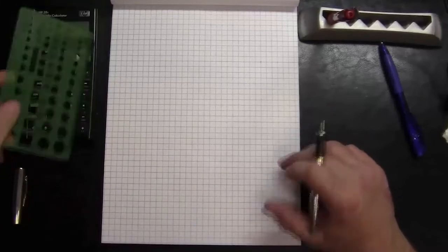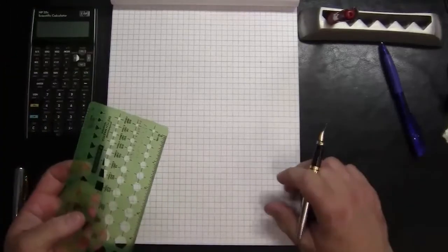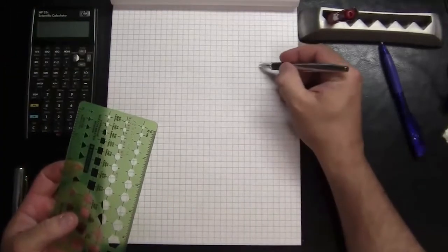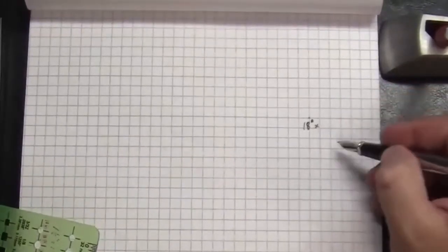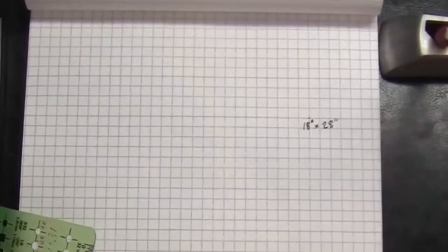Welcome back. In this example, we're going to start looking at a grade beam. I want to look at a grade beam that'll be 18 inches wide, concrete grade beam, by 28 inches deep.